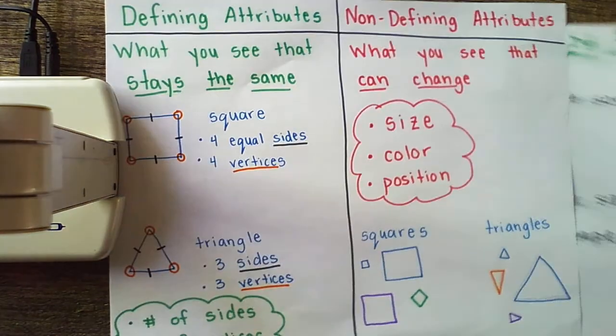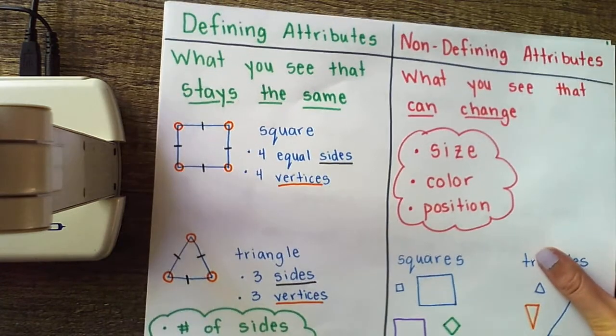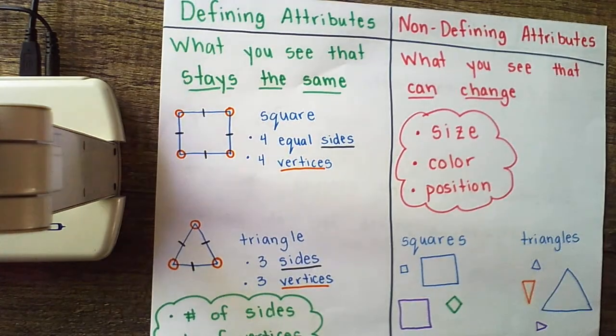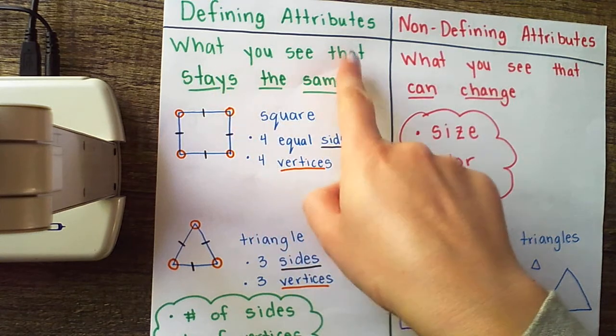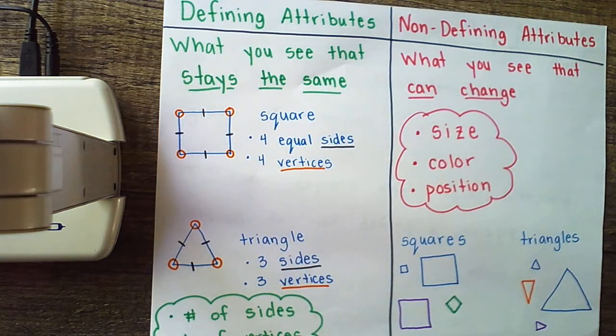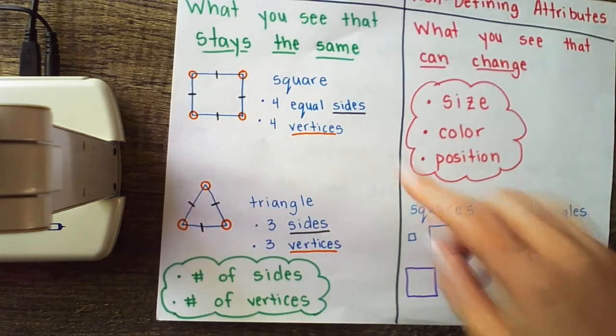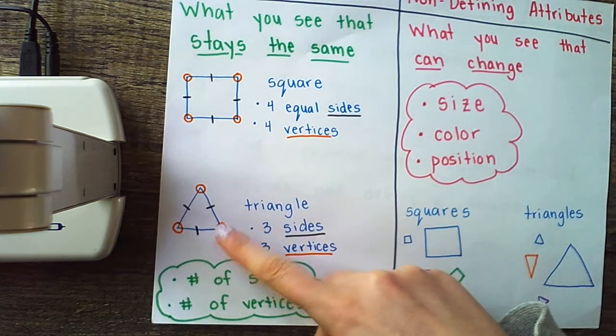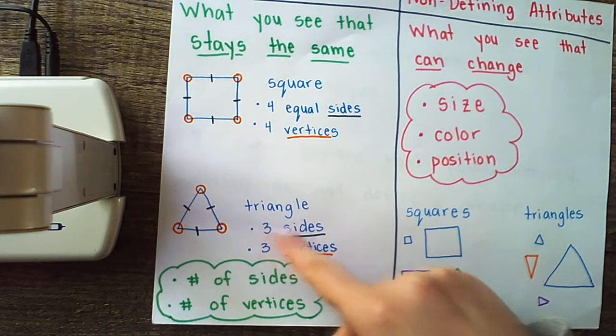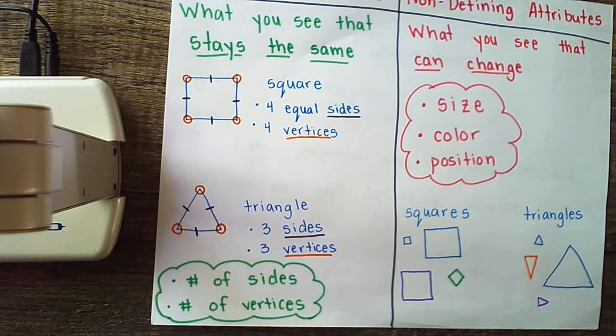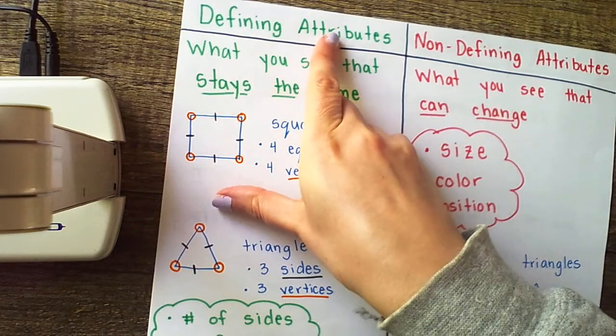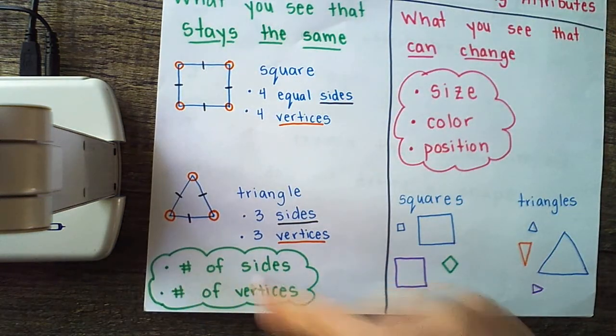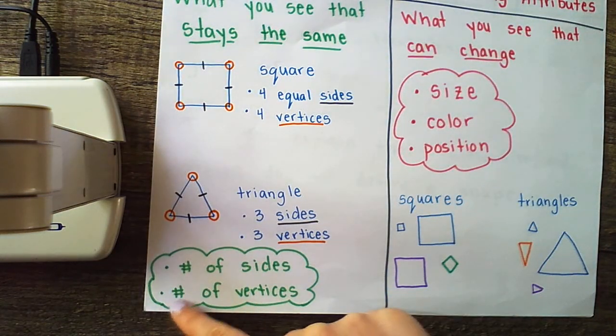So here's what we worked on yesterday. Yesterday we discussed defining and non-defining attributes. We said defining attributes are what you see that stays the same. No matter what, this shape will always have these attributes. That's what makes it that shape. For example, squares are shapes that have four equal sides and four vertices. Triangles are shapes that have three sides and three vertices. So whenever you're looking for defining attributes, we want to know the number of sides that that shape has as well as the number of vertices.